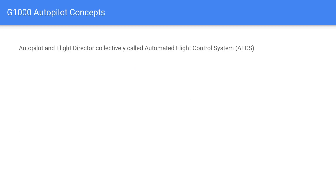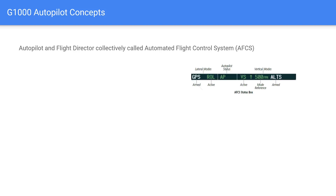In order to start understanding how the G1000 can be used to fly instrument approaches, first we need to talk about the autopilot and the flight director. This is specific to the GFC-700. The KAP-140 can do some of these things, but not all of them and not as integrated. Cessna collectively calls this the Automated Flight Control System — the AFCS — the flight director and the autopilot together.